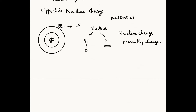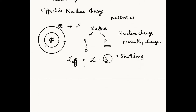In a stable, neutrally charged atom, the number of protons and the number of electrons is the same. Consider this as a carbon atom with six protons and six electrons. In this, the effective nuclear charge is equal to Z minus S, where Z is the nuclear charge and S is the shielding constant.